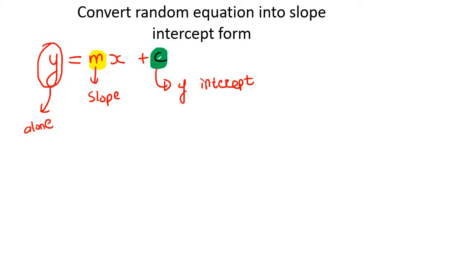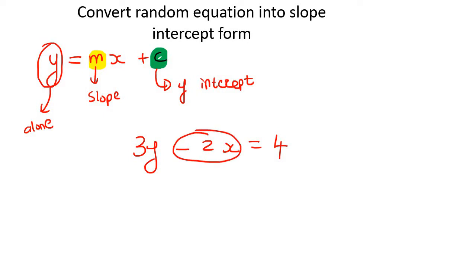So let me give you an example: 3y minus 2x equals 4. Remember, your only goal right now is to get the y alone — that is all you must be thinking about. So what you can do is take this 2x to the other side, and when it goes to the other side, it would end up becoming a positive.